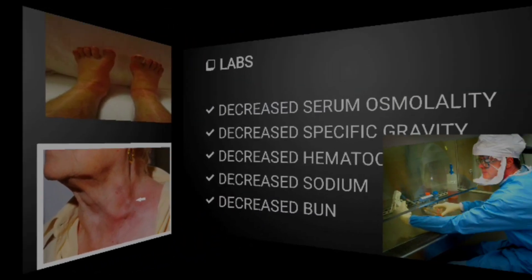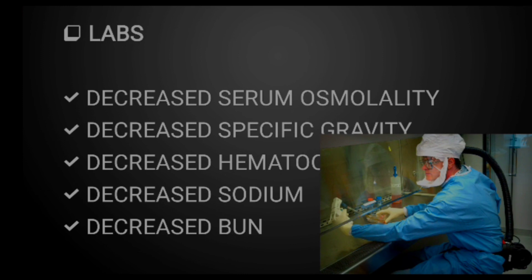Now let's look at the labs for hypervolemia. Remember: overhydrated means diluted, and dilution makes the numbers go down. You will see decreased serum osmolality, decreased urine specific gravity, decreased hematocrit level, decreased serum sodium, and decreased BUN, that is blood urea nitrogen.